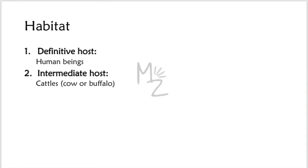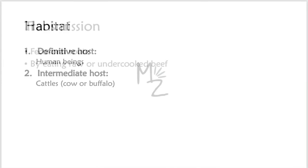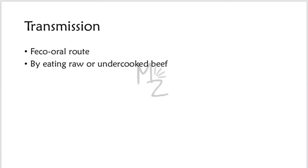Human beings are the definitive host, in which adult worms live in the small intestine. The intermediate hosts are cattle — cows and buffaloes — in which cysticercus bovis lives in muscular tissue, especially the muscles of the tongue, neck, shoulder, and hamstrings. Transmission occurs via the fecal-oral route or by eating raw or undercooked beef.